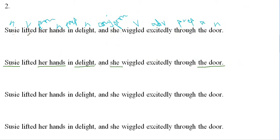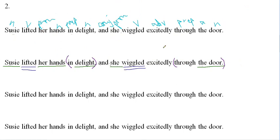Our first verb is 'lifted,' so we're going to underline that one twice. Next verb is 'wiggled,' underline that one twice. We need to look at the prepositional phrases, so we put those in parentheses. We have 'in delight.' Then we cruise over here to our next preposition — 'through the door.' Notice how we're looking up at the parts of speech to tell us where our phrases are, kind of helping us out as a guide.